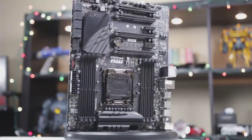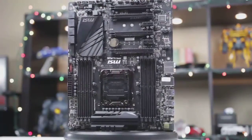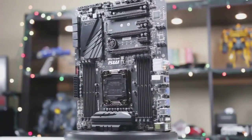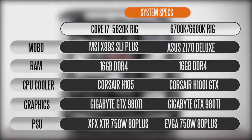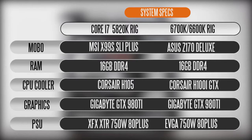For our benchmarking rig, the 5820K is using the MSI X99 SLI Plus motherboard platform. Both rigs are using 16 GB of DDR4 memory from Corsair clocked around 2800 MHz. For our Skylake processors, we're using the Asus Z170 Deluxe motherboard, again with the same RAM configuration. If you want more detailed information about both rigs, check out the description where you'll find the full breakdown and parts list.